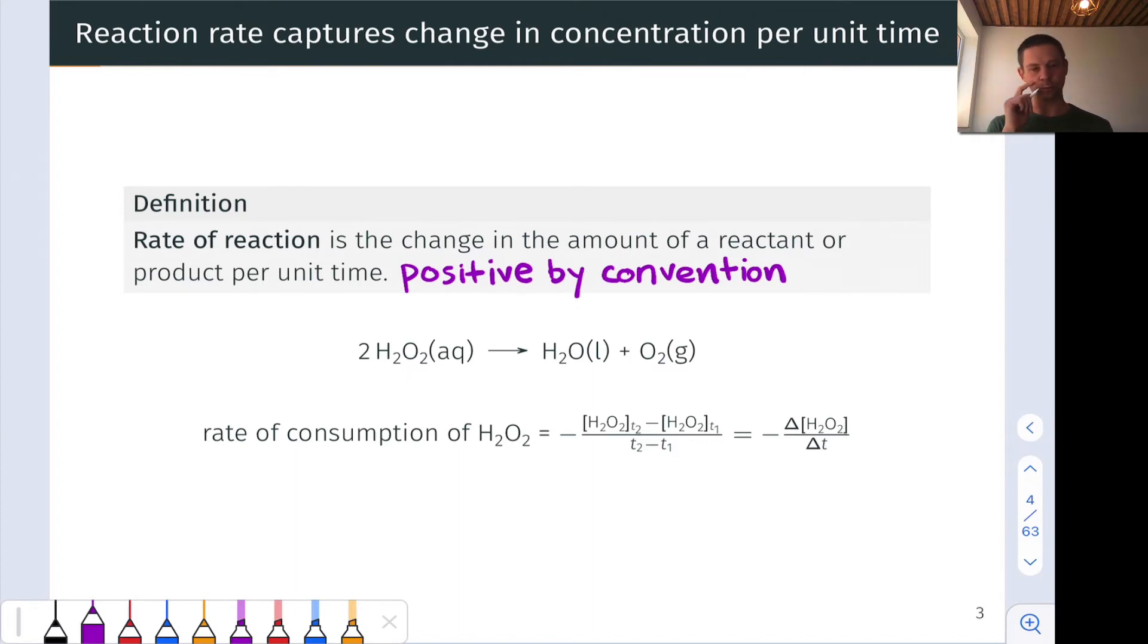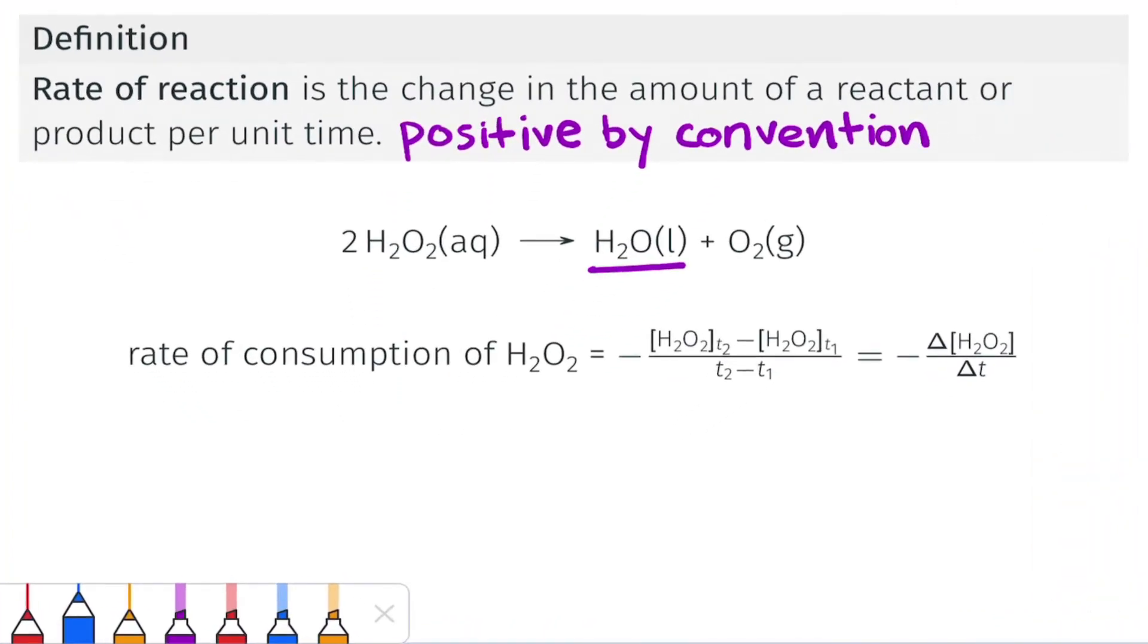So take, for example, the reaction you see on this slide. 2H2O2 in aqueous solution goes to H2O liquid and O2 gas. And we can think about reaction rate or rate of reaction in terms of any of these three species. For example, we could think about the rate in terms of H2O appearing or in terms of O2 appearing or in terms of H2O2 disappearing.